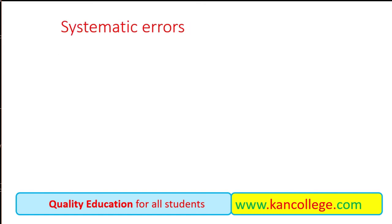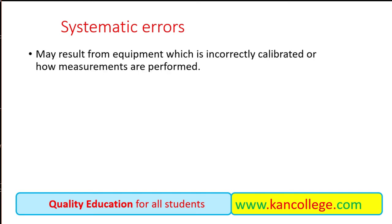Another type of error is a systematic error. Systematic error refers to an effect that influences all the measurements of a particular quantity equally. These errors may result from equipment which is incorrectly calibrated or from how measurements are performed.